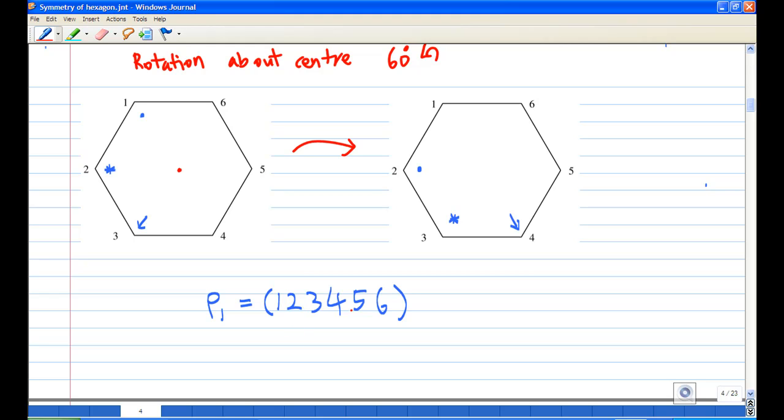Then the object on location 2 moves to location 3, and the object on location 3 moves to location 4, and so on. So eventually we get a six-cycle. We call it row 1, this rotation 60 degrees anti-clockwise: (1 2 3 4 5 6).